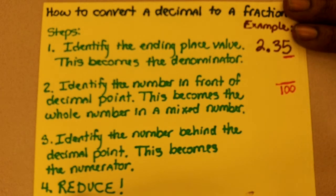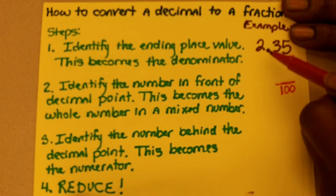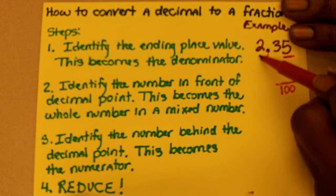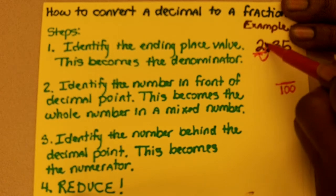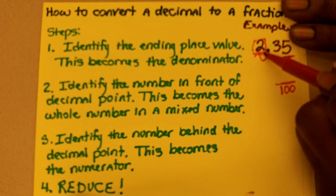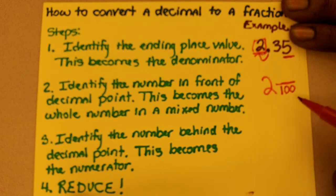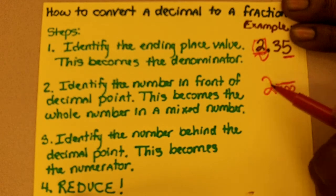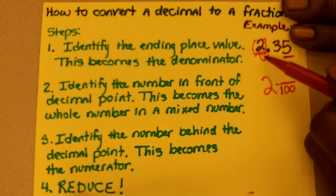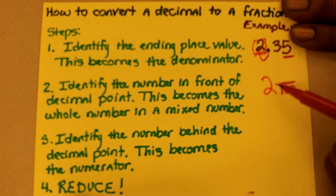Step two, identify the number in front of the decimal point. This becomes the whole number in the mixed number. So in other words, if there happens to be a whole number in front of the decimal point — like in this case there's a two — that means the two is now the whole number, and you're going to have a mixed number. If there wasn't a number there, then you would just have a proper fraction.